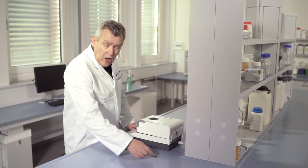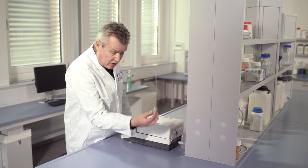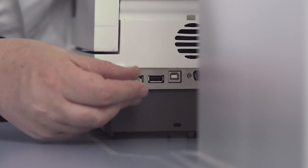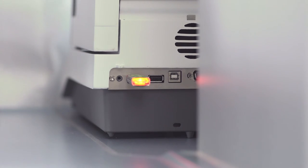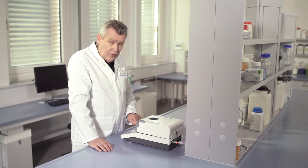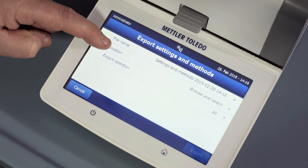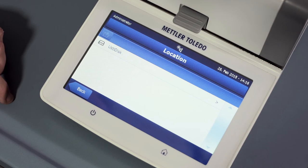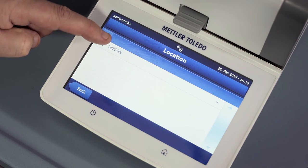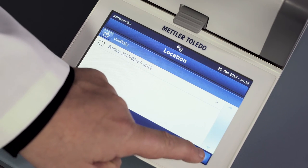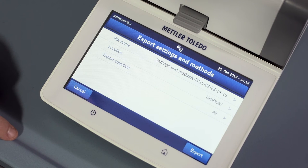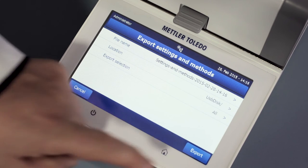Now, plug in the USB flash drive, and select the USB drive under location, and export the settings.